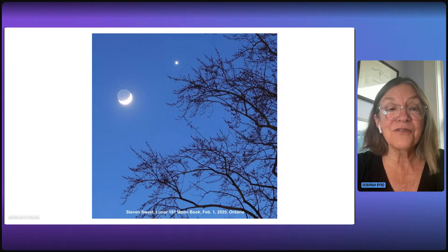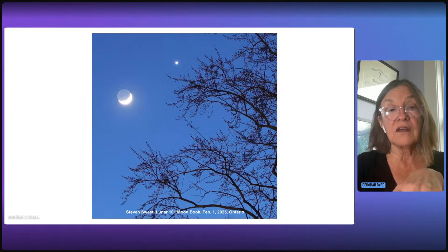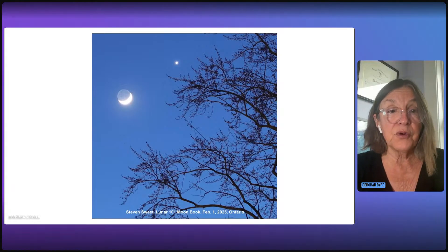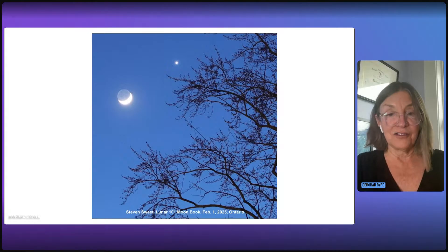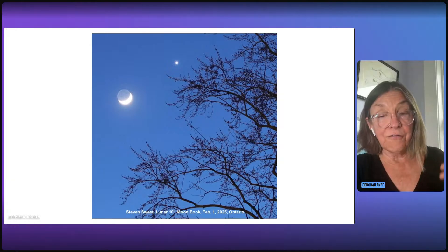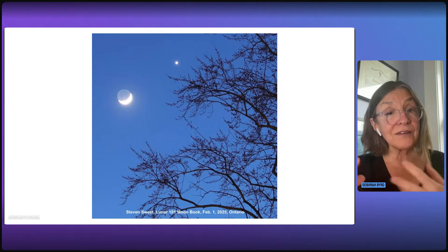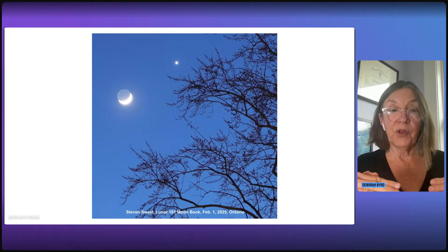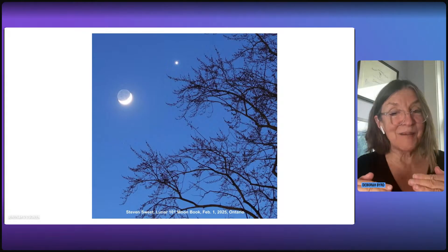So this image is from Stephen Sweet in Ontario. He's a member of the EarthSky Community of Photographers, and you'll find Stephen as Lunar 101 Moon Book on Facebook and other social media. He's been there for a long time. And this photo shows Venus near the moon on February 1st, and they looked super amazing that night. The two brightest objects in the night sky right next to each other. So you won't see Venus near the moon this week. The moon has moved on, and in fact, we've got a full moon tonight. But one interesting and maybe surprising thing is that if you looked at Venus through a telescope in early February, you would have found, on the night that this picture was taken, you would have found Venus and the moon in exactly the same phase.